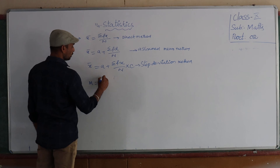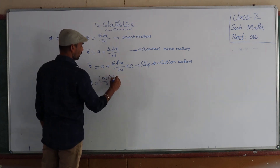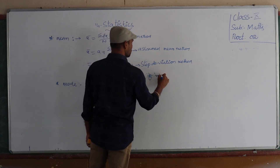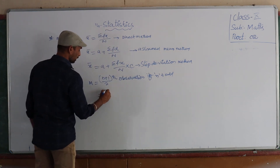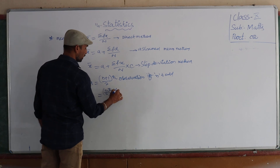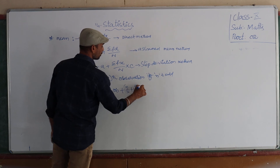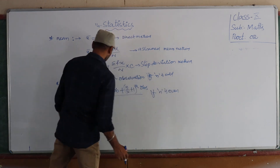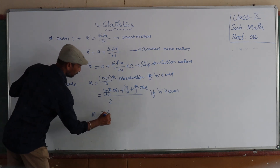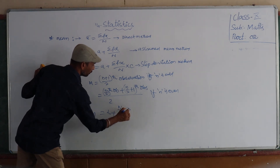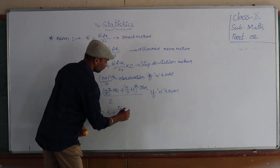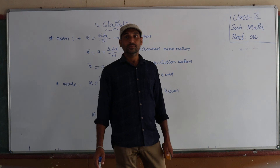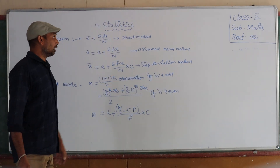For median: if n is odd, median = (n+1)/2 th observation. If n is even, median = average of (n/2)th and (n/2 + 1)th observations. For grouped data, median = l + [(n/2 − cf) / f] × c. Mode for grouped data follows the formula discussed. Further problems and explanations will be covered in the next video.